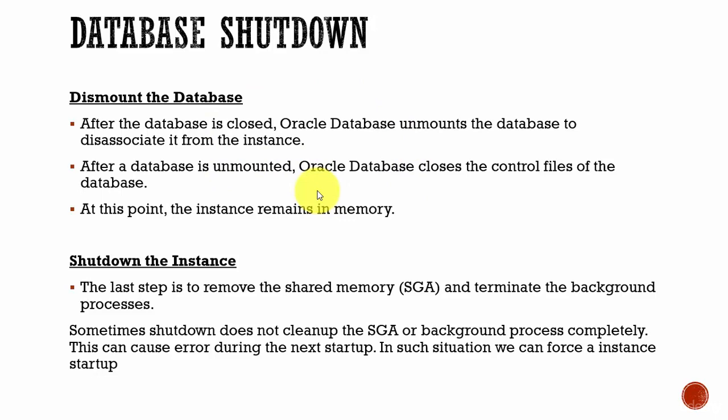At this point, even though the instance is deassociated with the database, the instance is still in the memory. During the third phase, where the shutdown of the instance happens, the instance is completely removed from the memory, which is our shared global area, and then terminates all the background processes associated with the instance.